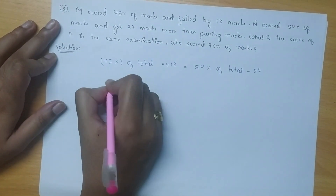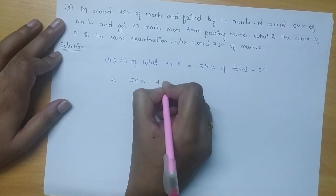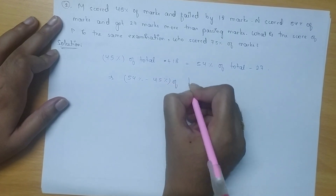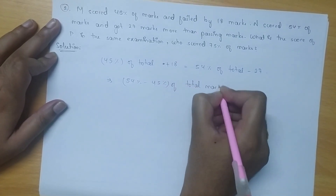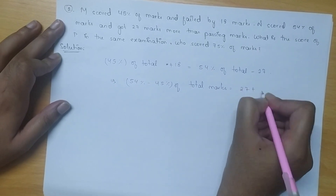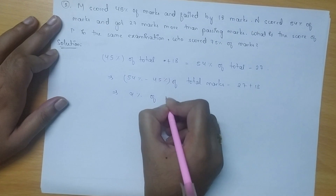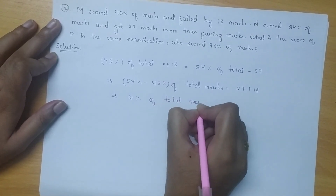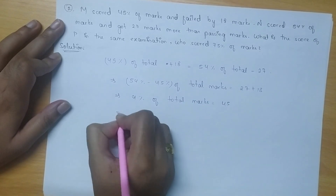On reducing we get 54% minus 45% of total marks is equal to 27 plus 18. So, 9% of total marks will be equal to 45.